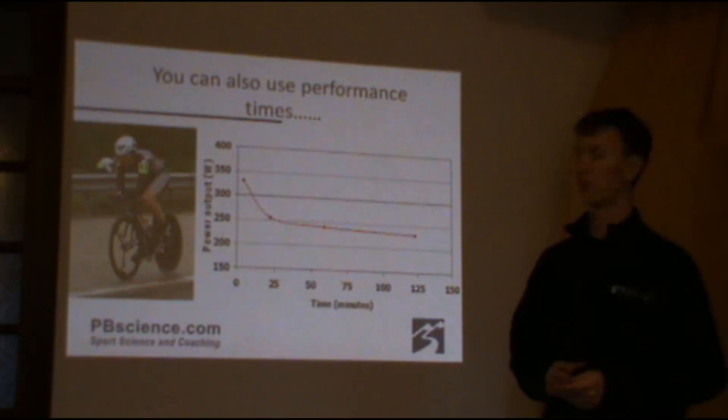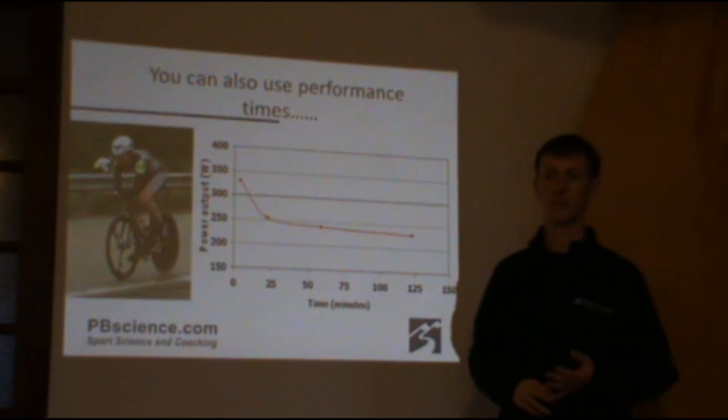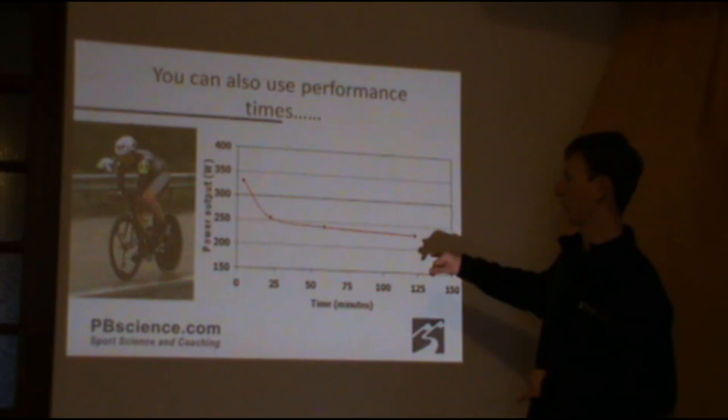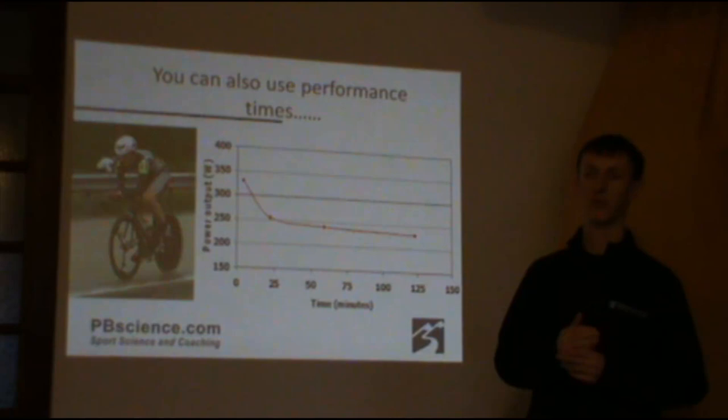You can also use your performance times. Within that, obviously you've got some 25 minutes, you've got a 10 mile, a 25 mile and a 50 mile time trial and something along the lines of pursuit or a much shorter effort like that. Something that's used in running a lot more is trying to predict your performance times in an event from the times you've done in maybe shorter events or longer events. So predicting a marathon time from a 10k, and you can do a similar thing with cycling. You've got more of a curve relationship there, but you can transform it and get a bit more straight line and predict from that.